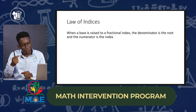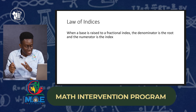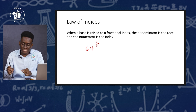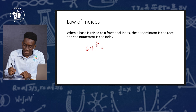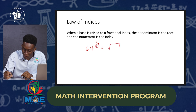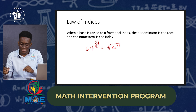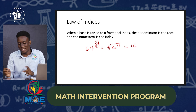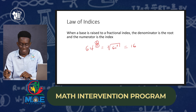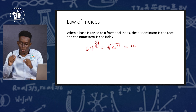The next law says when a base is raised to a fractional index, the denominator is the root and the numerator is the index. So for 64 raised to the 2 over 3 power, we rewrite it as the cube root of 64 raised to the second power. Punching this into the calculator gives 16, which is the same as entering 64 to the power of 2 over 3 directly. The denominator goes in the root part and the numerator is the power.